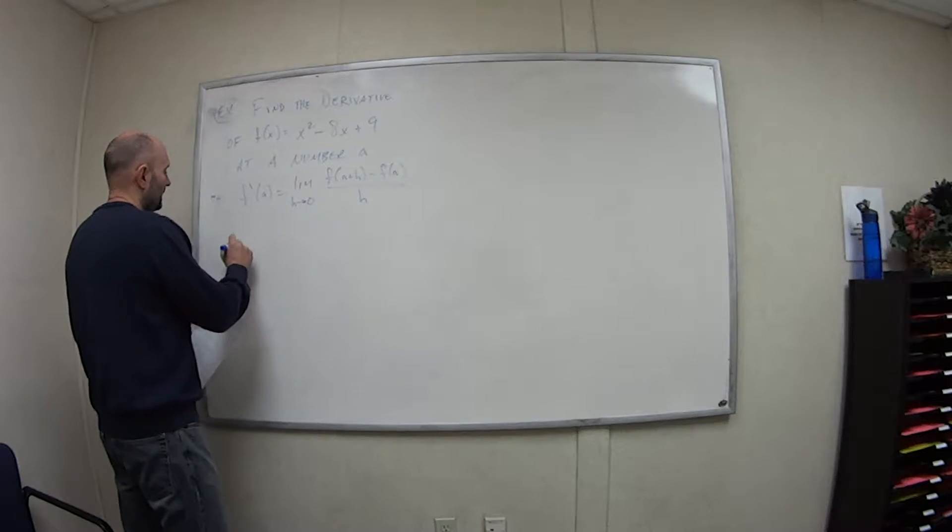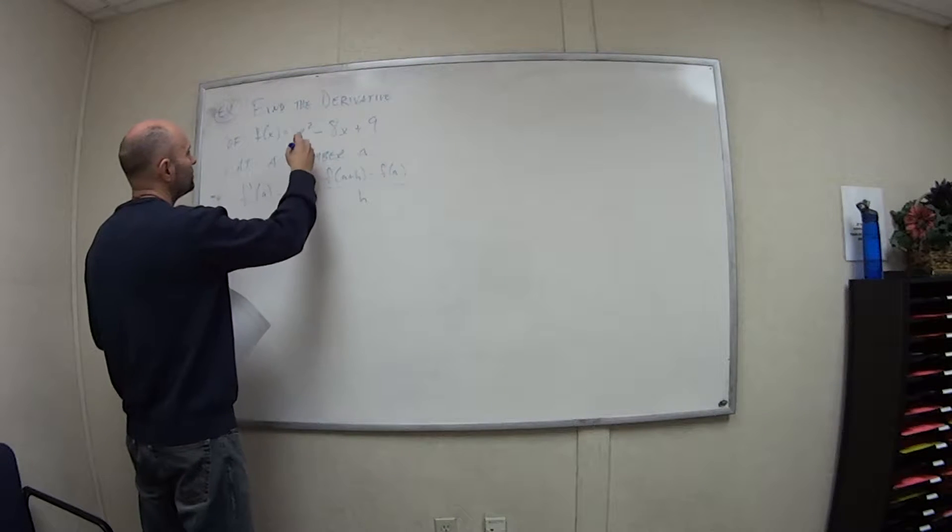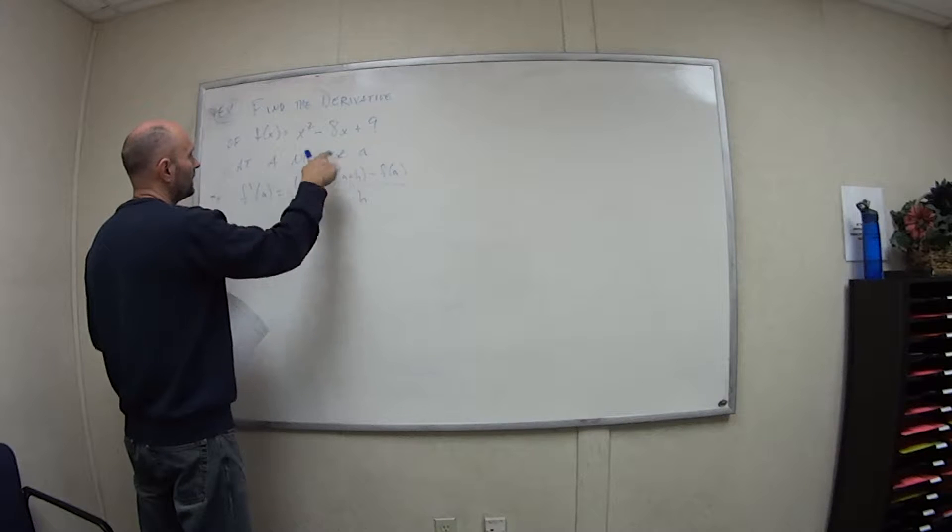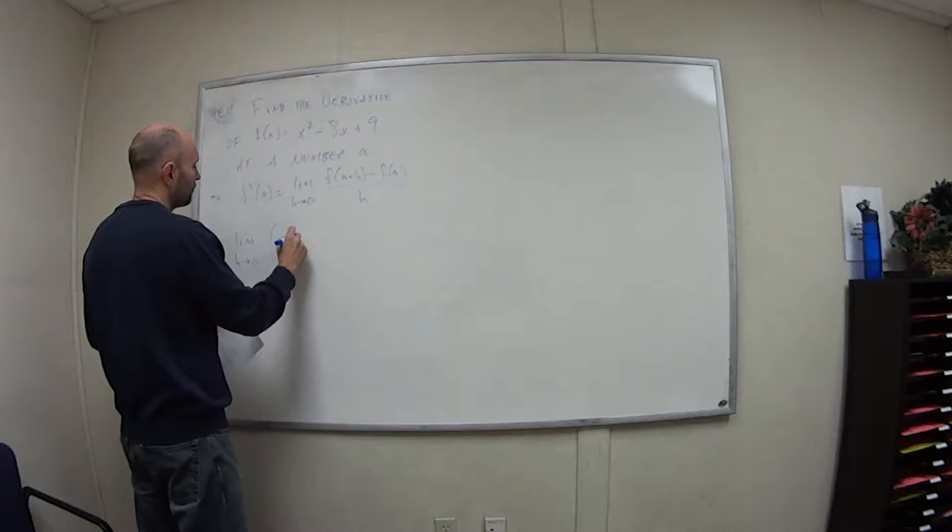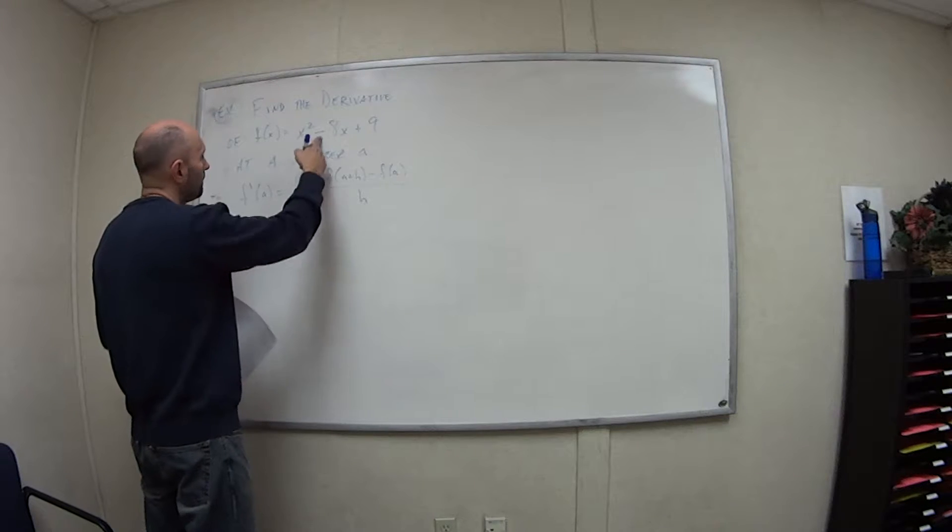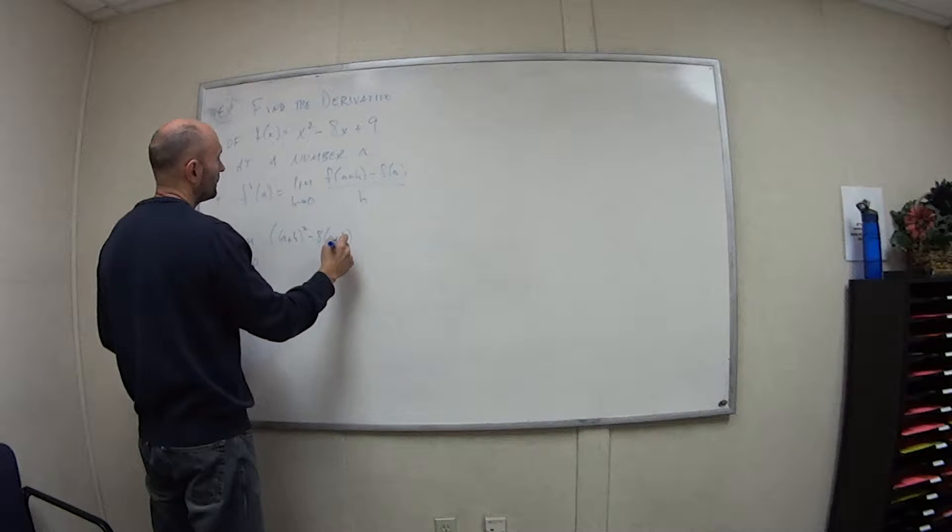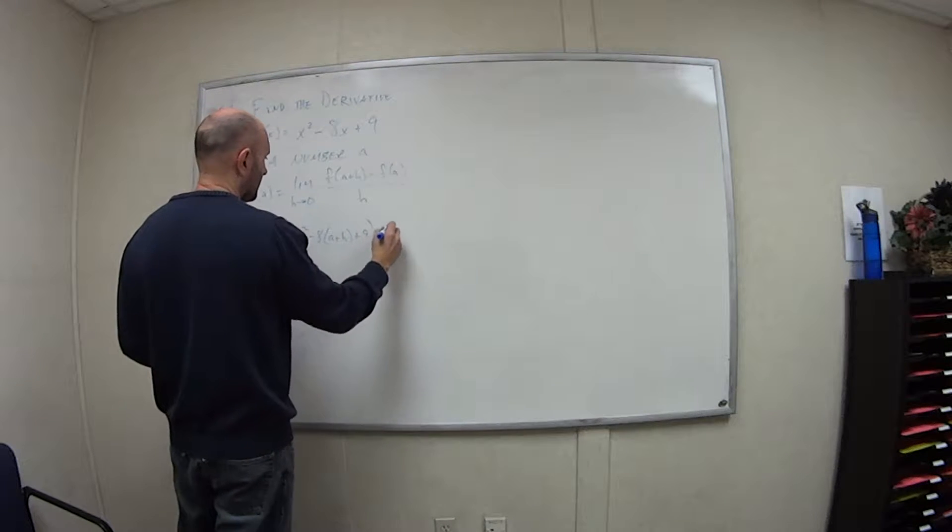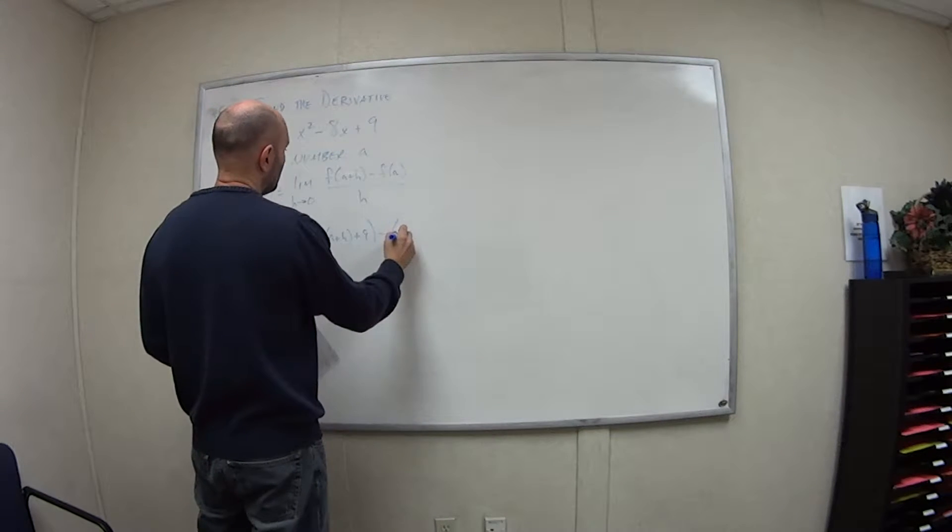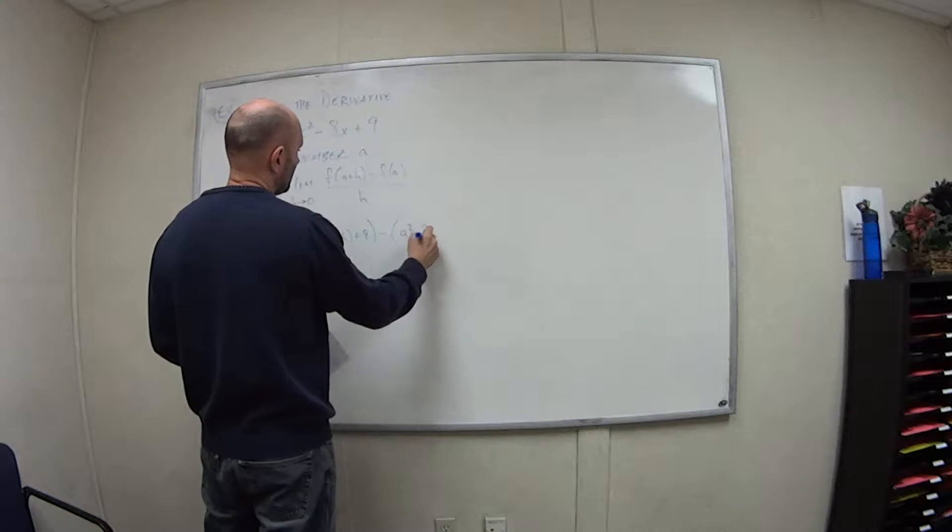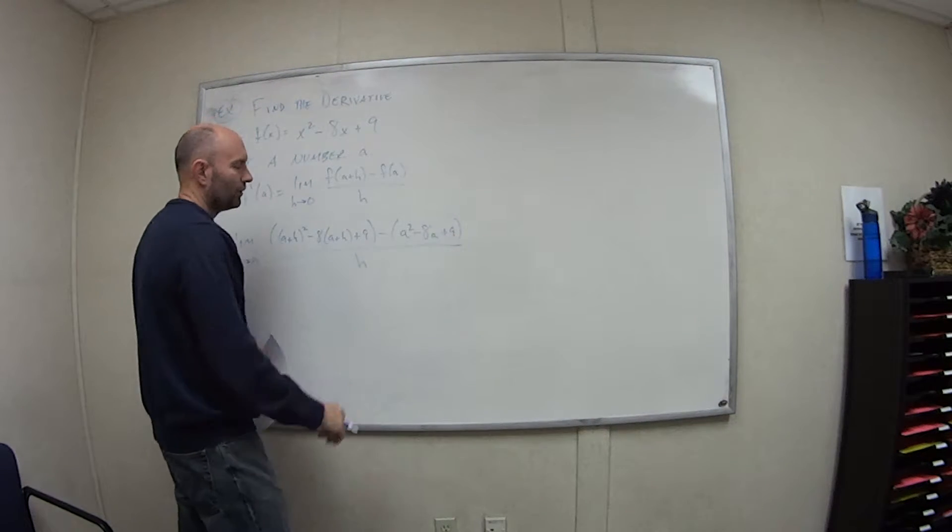So if we're finding this value, the limit as h goes to 0, f of a plus h - here's our f of x, so we're going to plug in a plus h anywhere we have an x. That's a plus h squared minus 8 times a plus h plus 9.